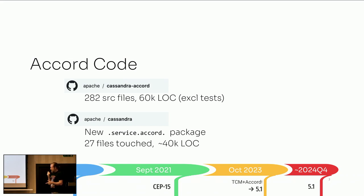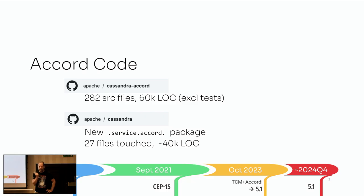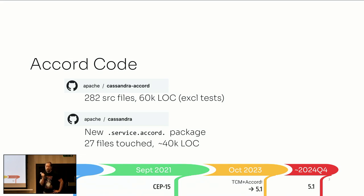The Accord project started many years ago inside Apple and in coordination with the University of Michigan. In September of 2021, CEP-15 hit the project. The discussion started and a month later we voted on it and work started properly. That has gone on for two and a half years now. At the end of last year, we decided to push it back from the 5.0 release to the 5.1 release, which we're expecting to come out after summer.